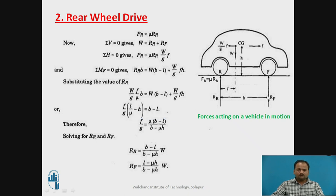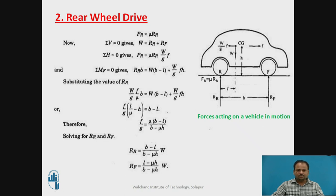As we need to calculate the maximum acceleration, we get the maximum acceleration from this formula: F by G equals mu times (B minus L) divided by (B minus mu times H). Similarly, as calculated previously for RR and RF values, we can calculate RF and RR values. This is all about the rear wheel drive.